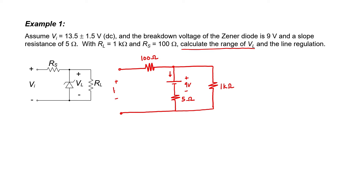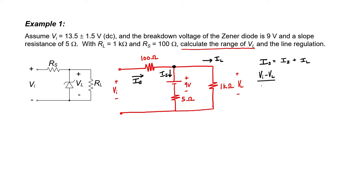This completes our circuit model. When I look at this circuit diagram, I only see two variables: V sub L and V sub I, so it shouldn't be too difficult to write an equation that relates one to the other. Let's label our currents. Let's call the input current I sub S, the output current I sub L, and the current passing through the Zener diode I sub Z. I know that the currents have to sum to zero at this node, so let's write that relationship down. To find I sub S, I can just apply Ohm's law across the first resistor.